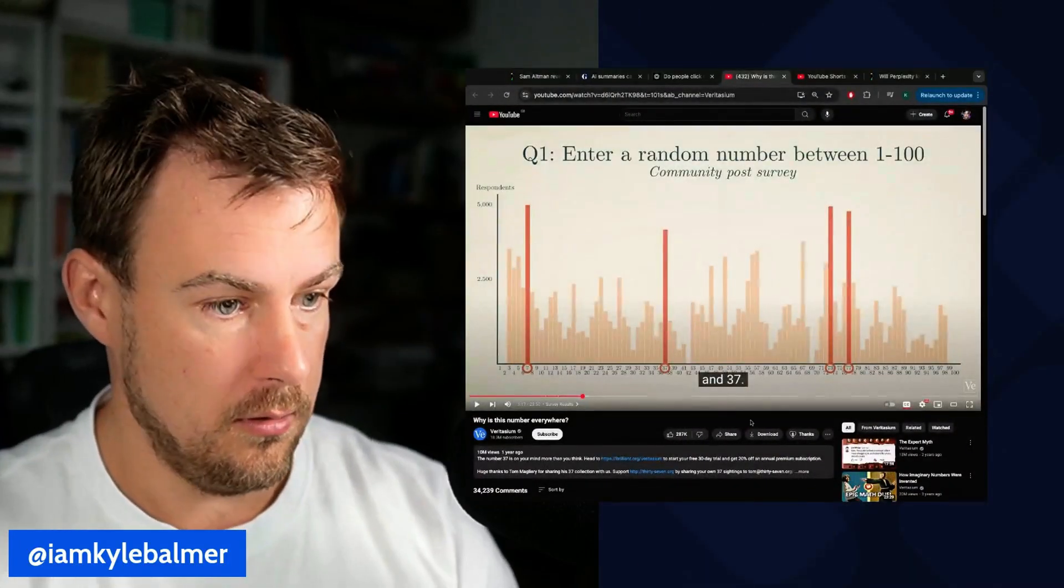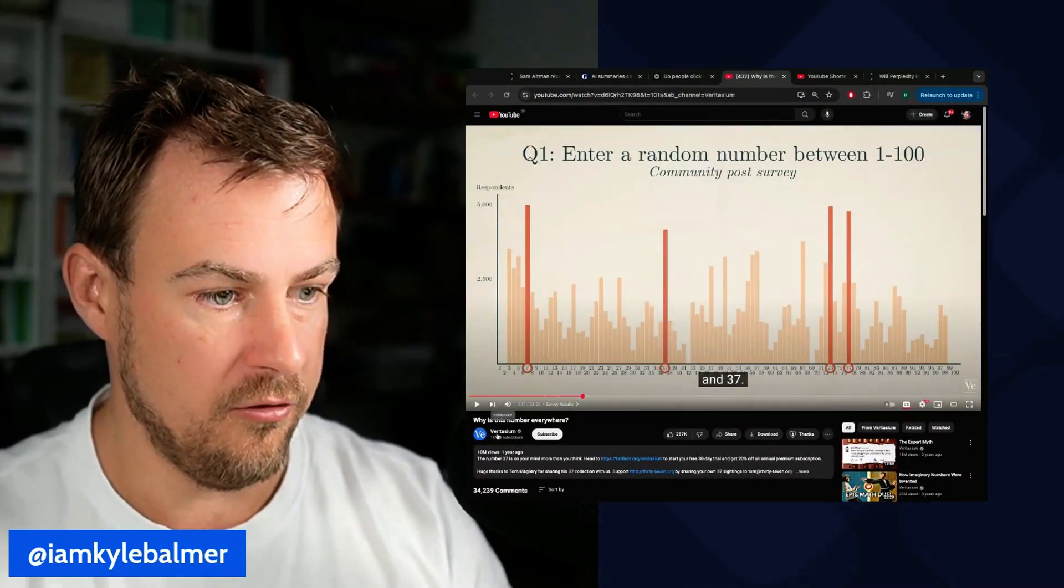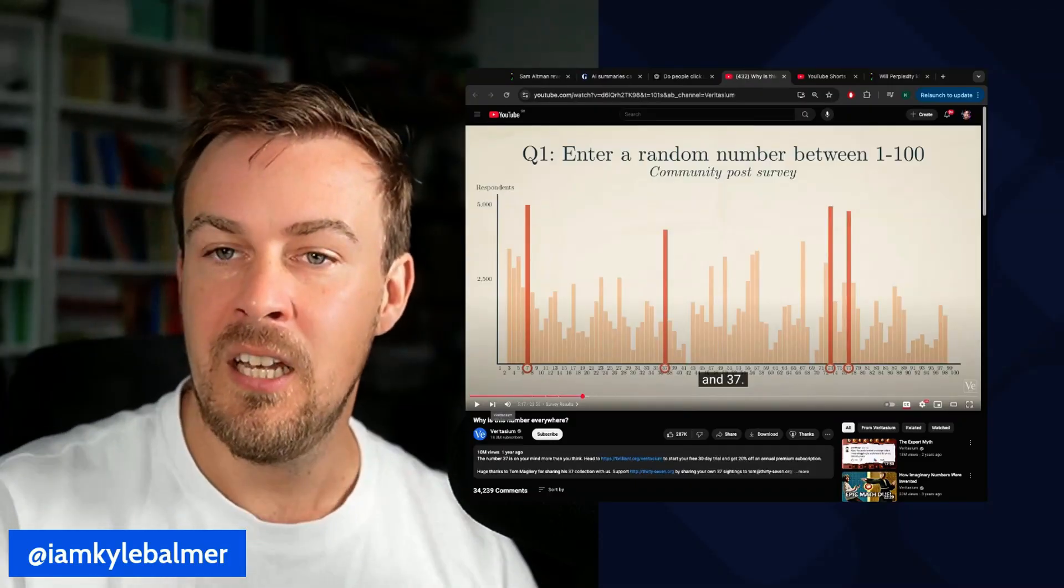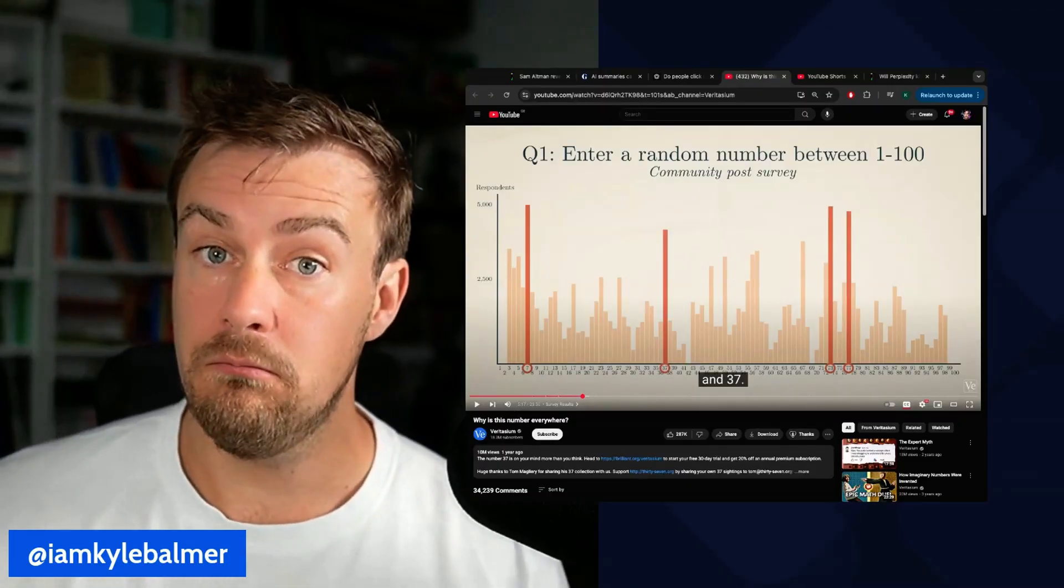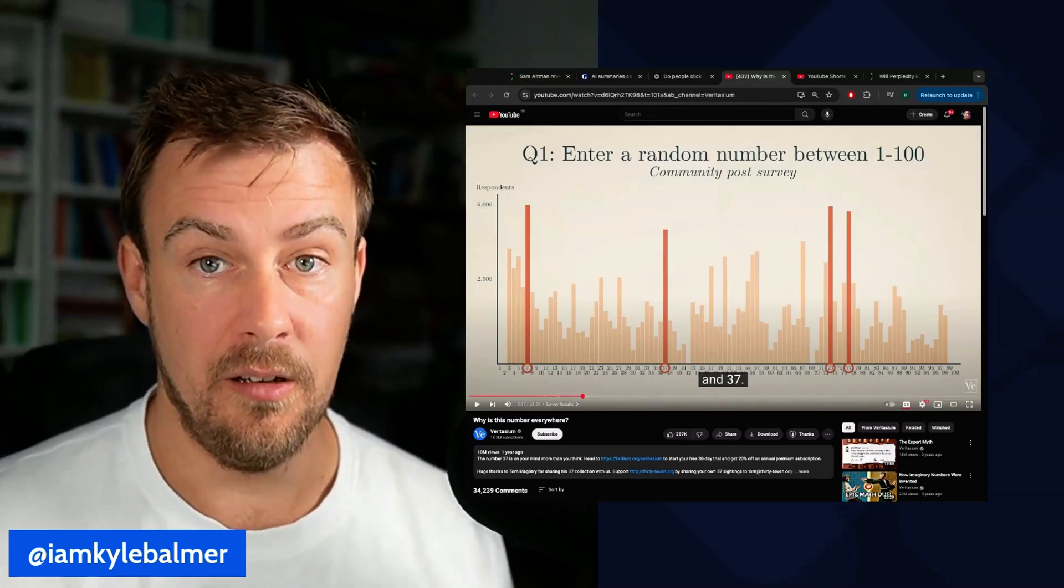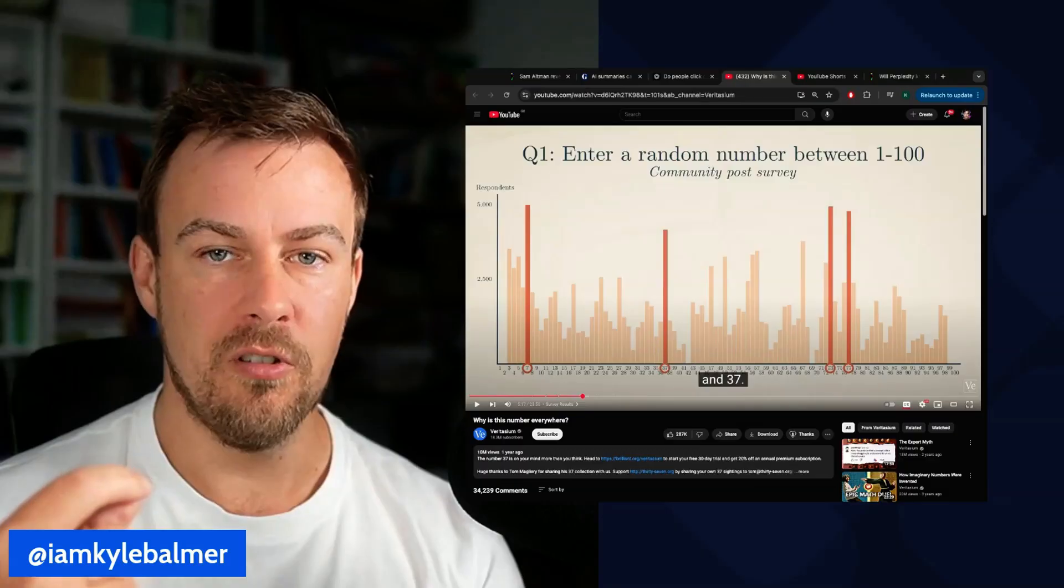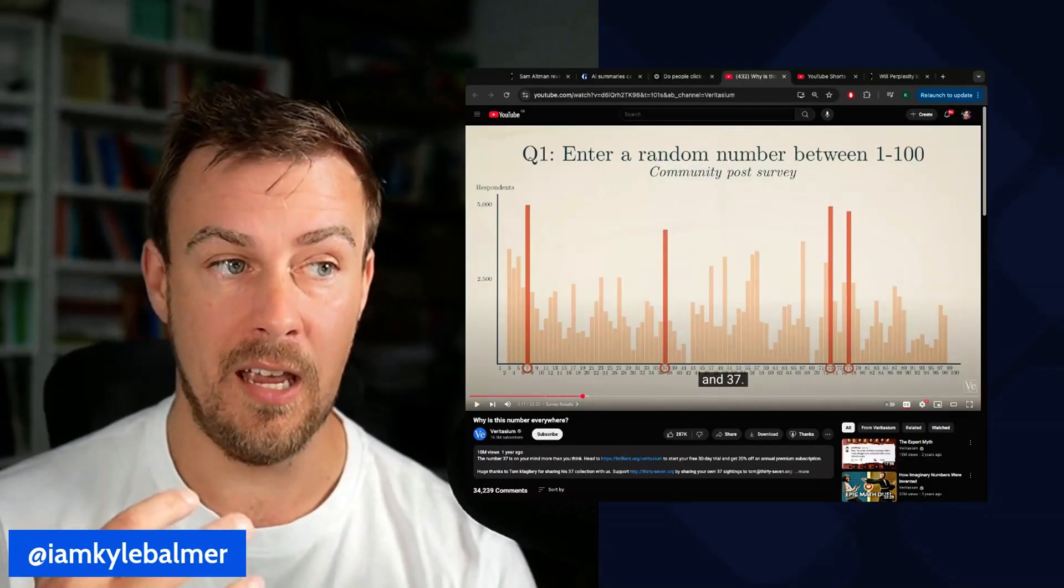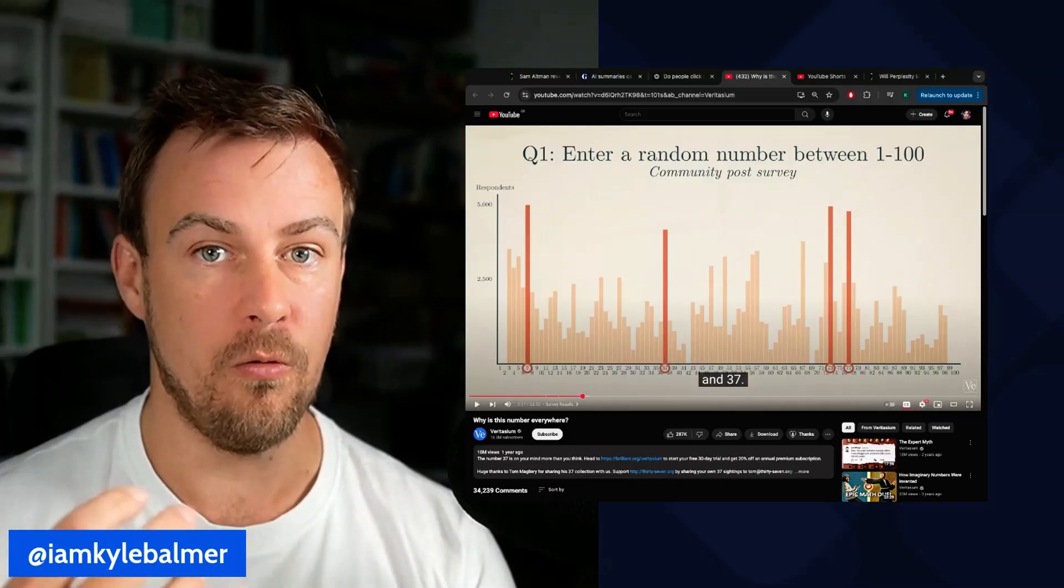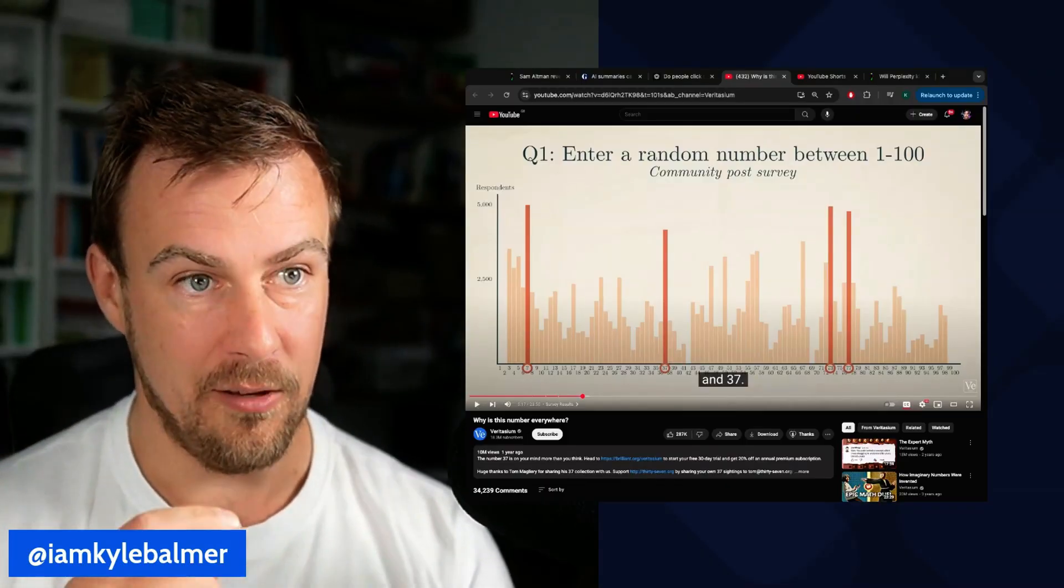Which is a bit weird. So a lot of human beings will say 37 and I went down this rabbit hole and there's a video which is well worth looking up called, why is this number everywhere? And it's by a guy called Veritasium. And it is about the number seven and the number 37 in particular. Also 77 is another one. When you ask a human to choose a random number, they don't. We're not very good at randomness. Instead, we choose something that sounds or seems random.